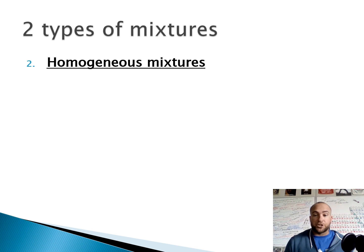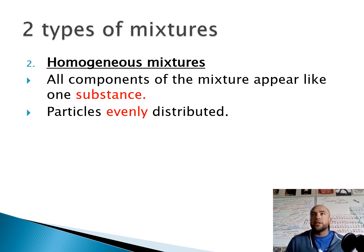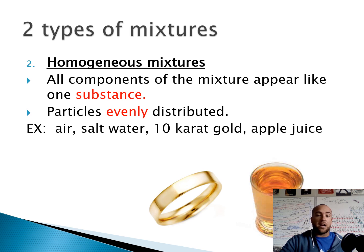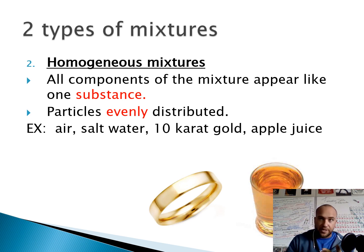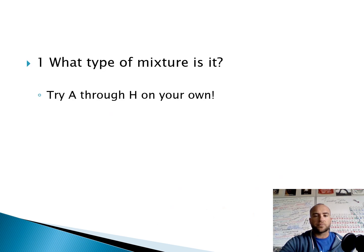The second type is a homogeneous mixture, which means it looks the same. All components of the mixture appear like one thing — particles are evenly distributed. Think about food: a heterogeneous mixture looks different, like a salad or a Chipotle burrito — you can clearly tell it's a bunch of different things. A homogeneous mixture looks like one thing — I always think of chocolate milk; it looks like one chocolatey goodness. Examples include air, salt water, 10-karat gold, apple juice — they all look like one thing. Air is a mixture of O₂, N₂, CO₂, and other gases; it's not on the periodic table, and when you look around it looks like one thing, so air is a homogeneous mixture.